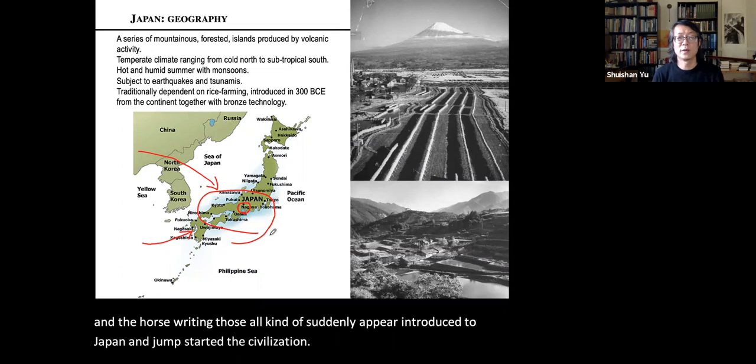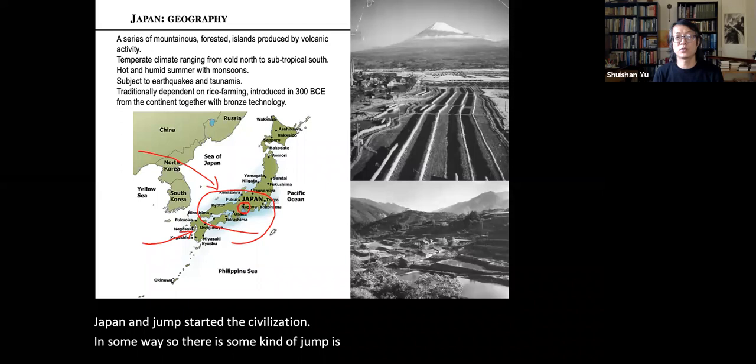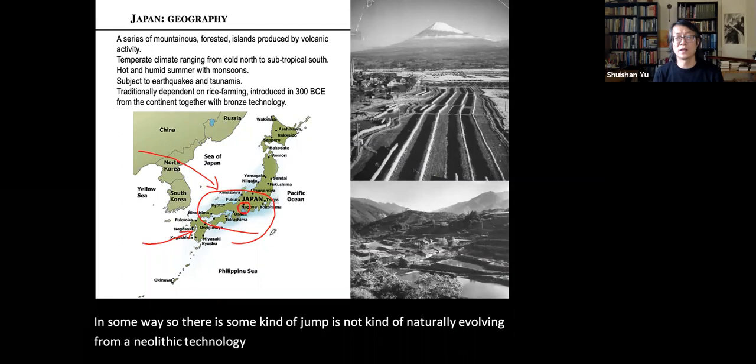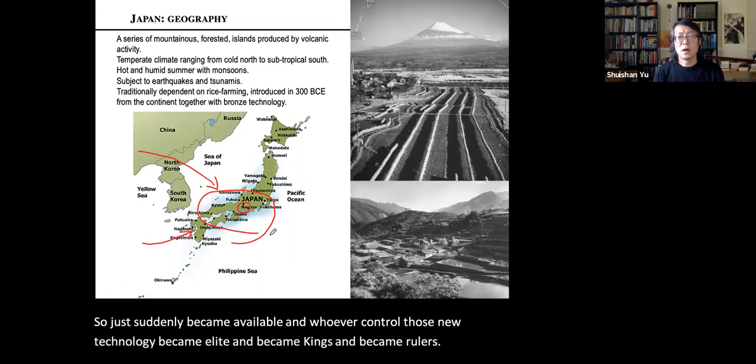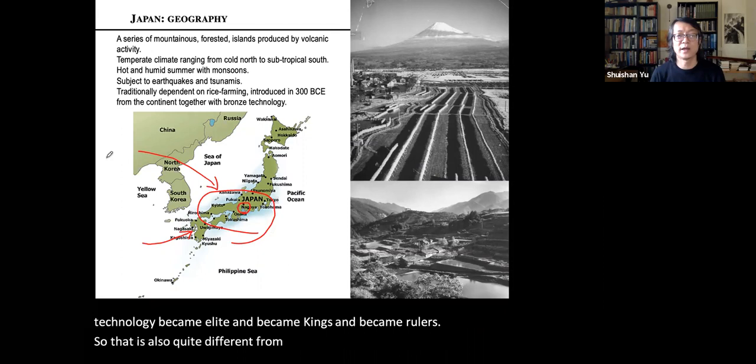In some ways it was a jump — not a natural evolution from Neolithic technology through the Bronze Age and Iron Age, but rather those technologies suddenly became available. Whoever controlled those new technologies became elite, became kings and rulers. This is quite different from Chinese history, which evolved gradually from Neolithic through the Bronze and Iron Ages.